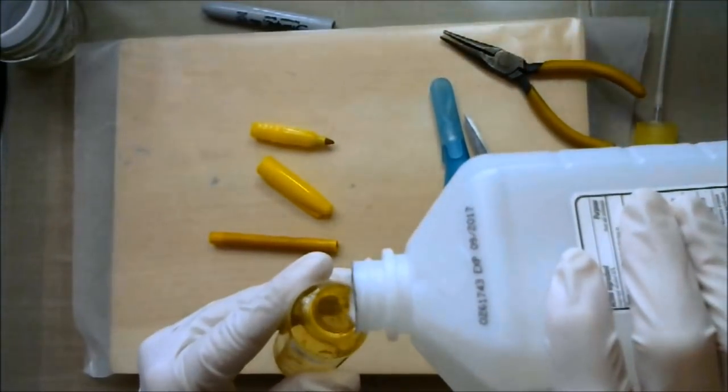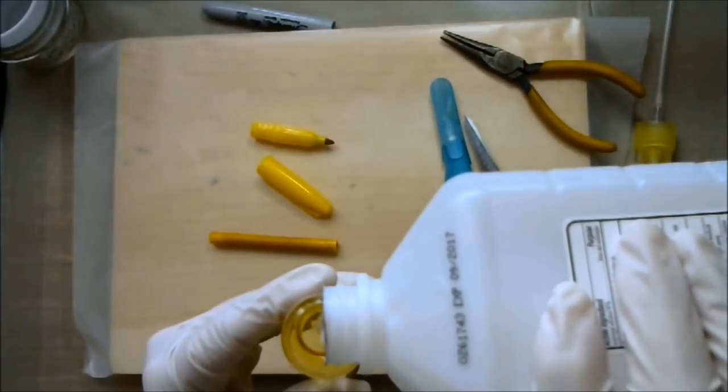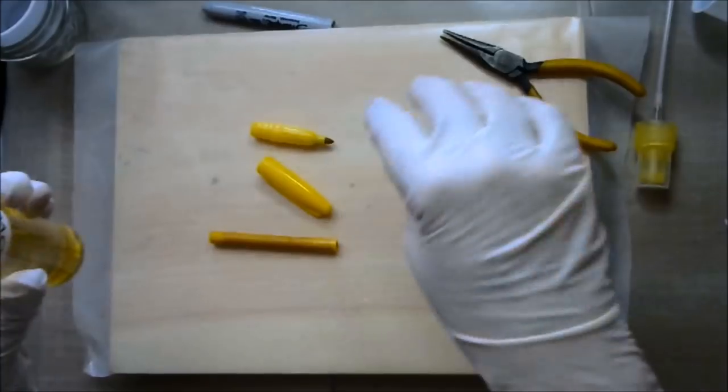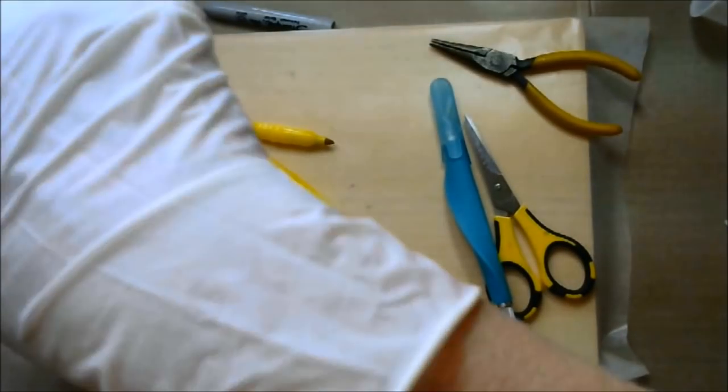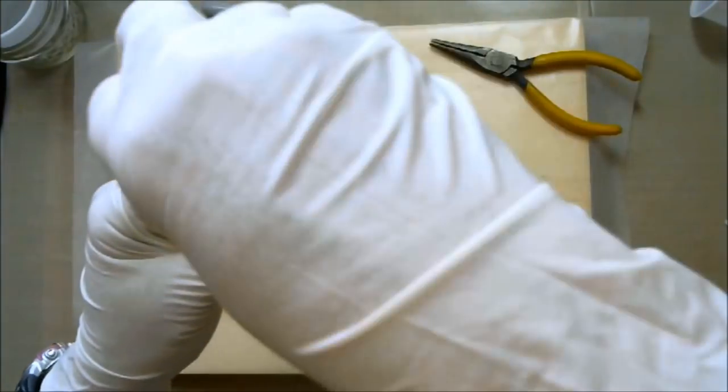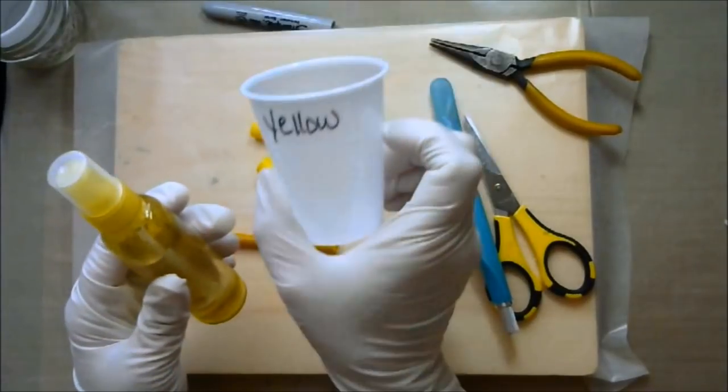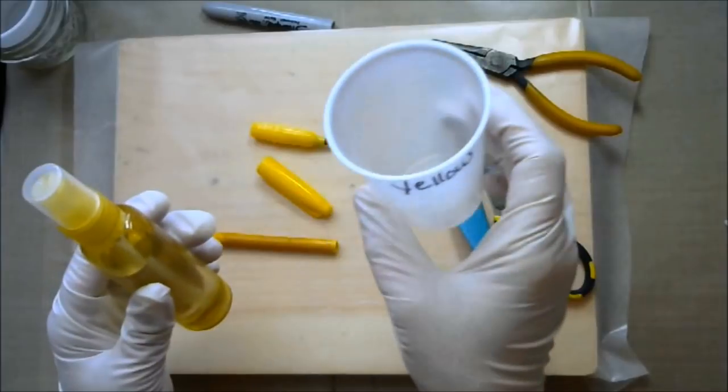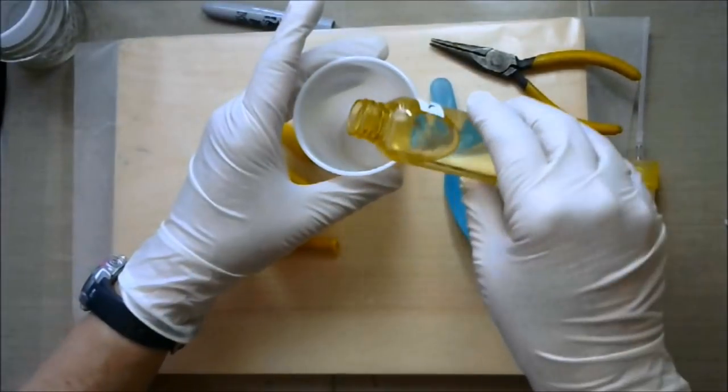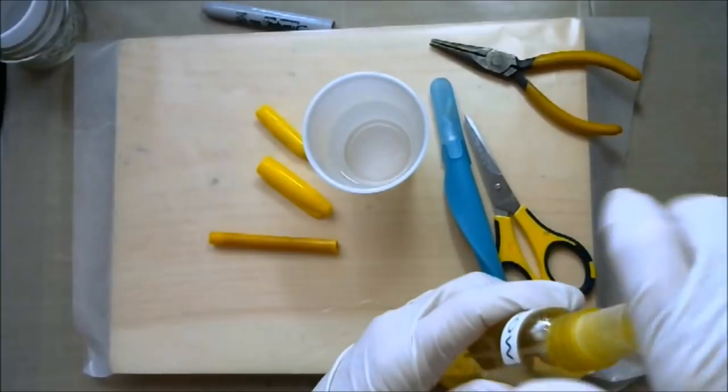Alright, what I'm going to do, I'm going to pour two ounces without making too much of a mess in here. I do a little too much because I want to be able to shake it. Now here's my Dixie cup and yes I labeled it yellow because I'm doing all the colors tonight.